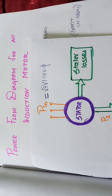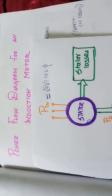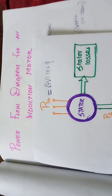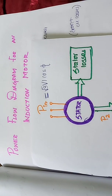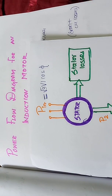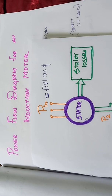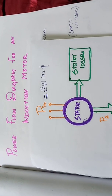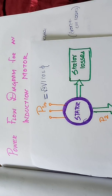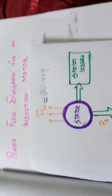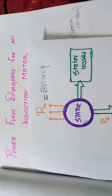First of all, we will talk about the motor. We will use the motor and turn on the switch. Once we turn on the motor, we will take an electrical input and an equivalent mechanical output. So we will talk about the conversion of electrical power into mechanical power.